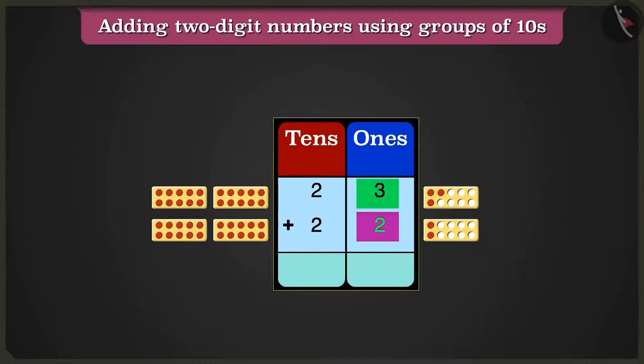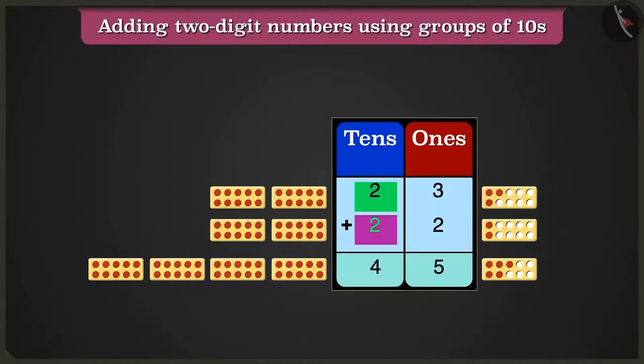3 ones plus 2 ones will equal 5 ones. Come to the box of tens. 2 tens plus 2 tens will make 4 tens.